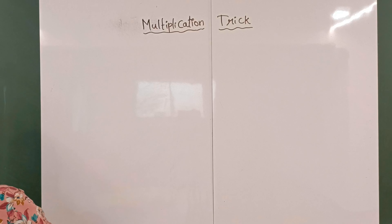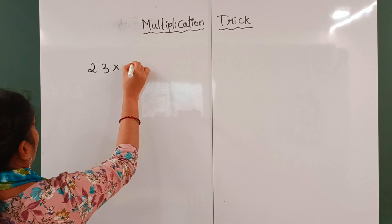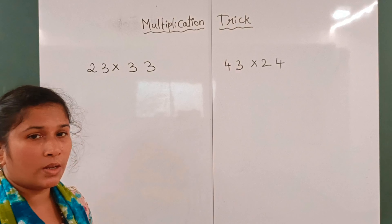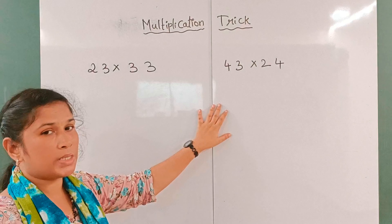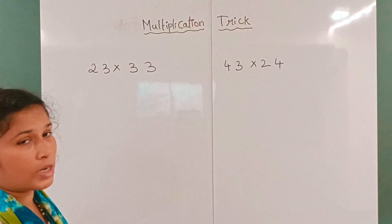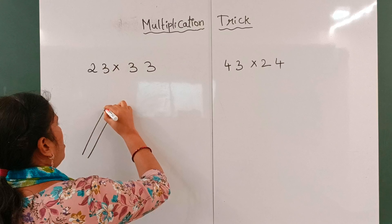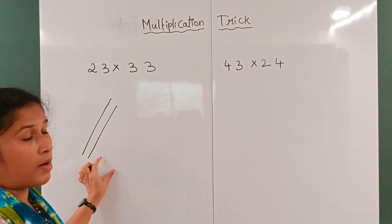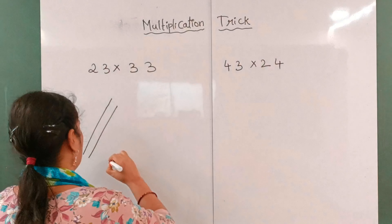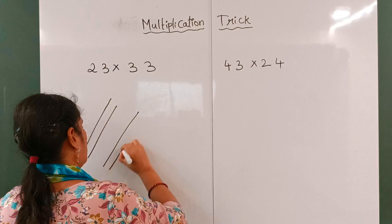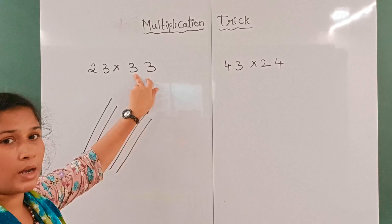Now we will give you another example. We have two lines: 1, 2. Next we have two lines. Next we have three lines: 1, 2, 3.